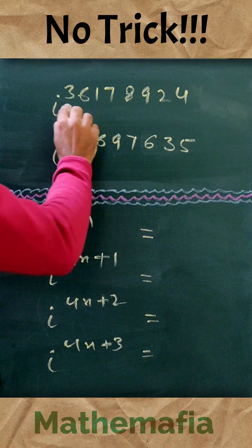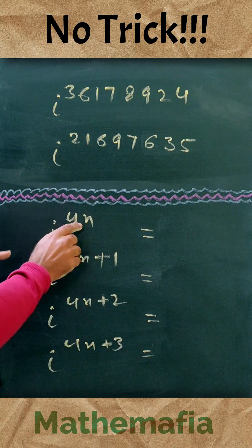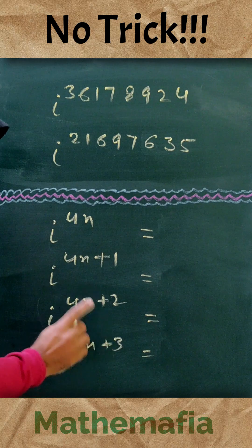We already know that any positive integer is either of the form 4n, 4n plus 1, 4n plus 2, or 4n plus 3.